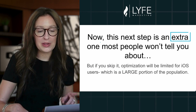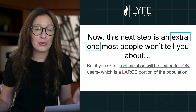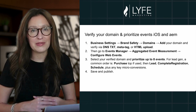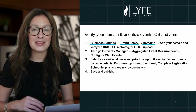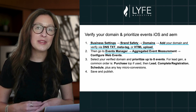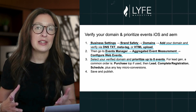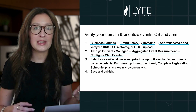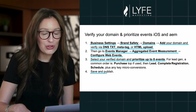Now this next step is an extra one that most people won't tell you about. But if you skip it, optimization can be limited for iOS users, which is a large majority of the population. So for reliable optimization on iOS devices, verify your domain and event priorities. Go to Business Settings, Brand Safety, Domains, add your domain and verify via DNS TXT, meta tag, or HTML upload. Then go to Events Manager, Aggregated Event Measurement, and configure web events. Select your verified domain and prioritize up to eight events. For lead gen, a common order is Purchase if used, then Lead, Complete Registration, Schedule, and then any key micro-conversions. Then hit Save and Publish.